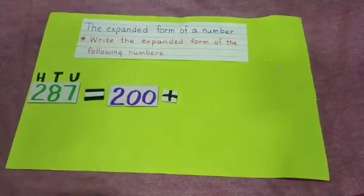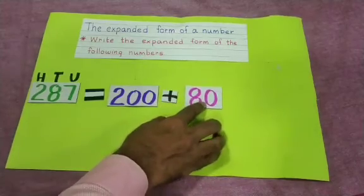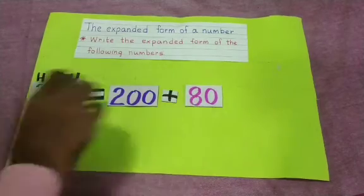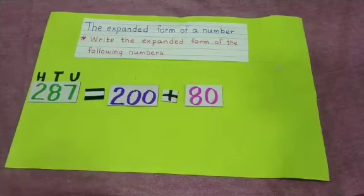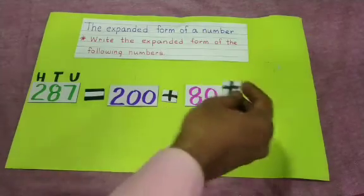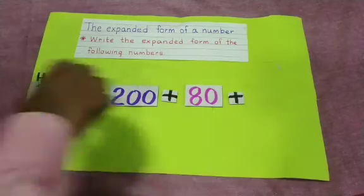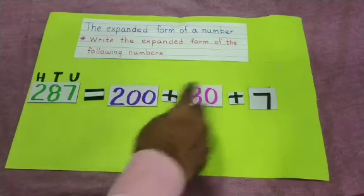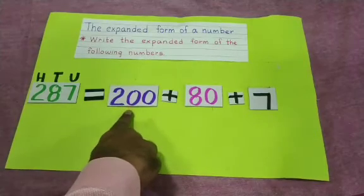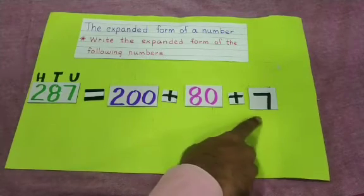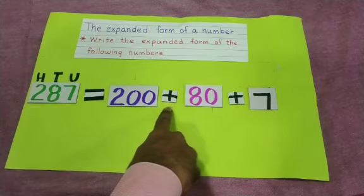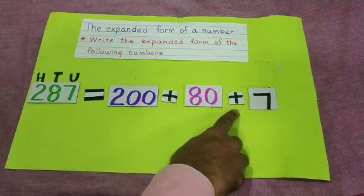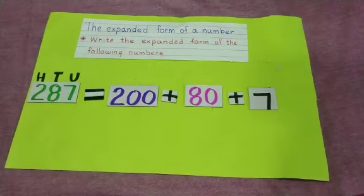8 tens means how much? 8 tens means 80. And how many units are there? 7 are there, so you have to write 7. So 287 = 200 + 80 + 7. You have to write the plus sign between these numbers, otherwise it will be wrong.